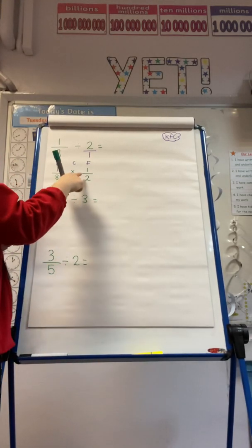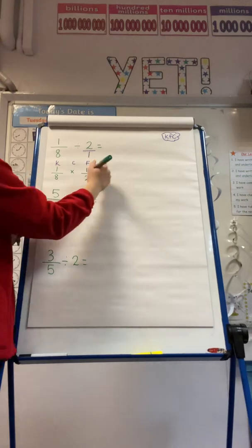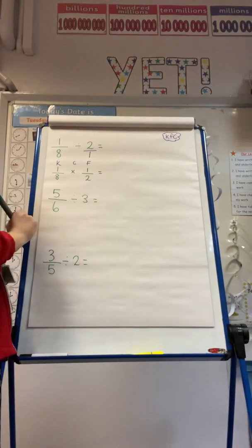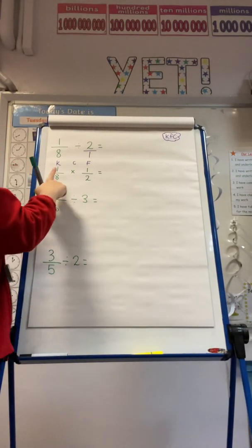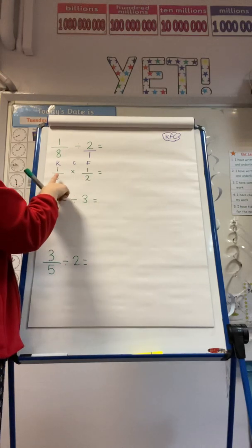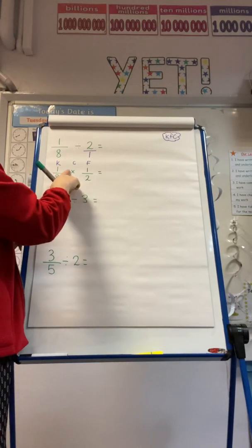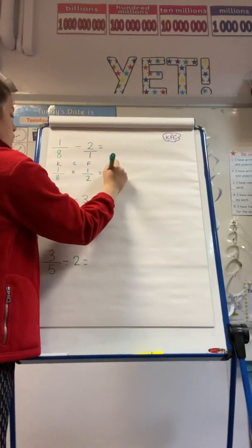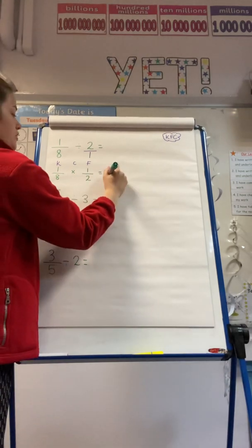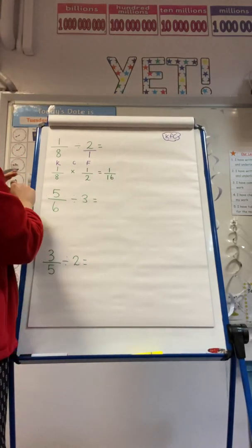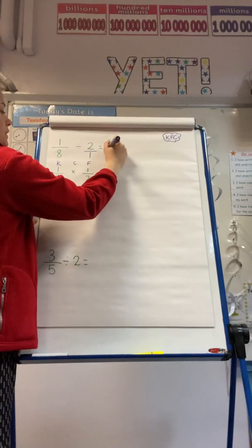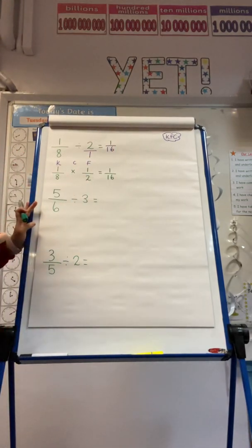So I'm now looking at 1 eighth multiplied by 1 half. And we know when multiplying fractions by fractions, we multiply the two numerators and the two denominators. So 1 times 1 is 1, and 8 times 2 is 16. So I know that 1 eighth divided by 2 is 1 sixteenth.